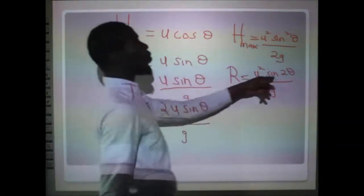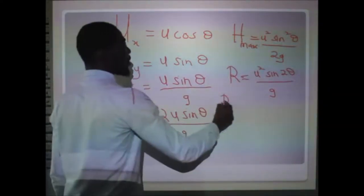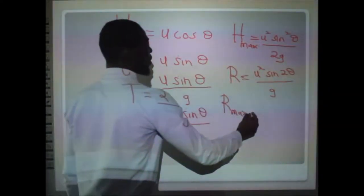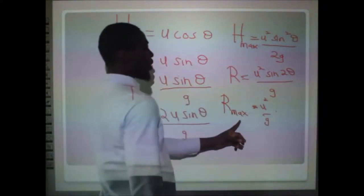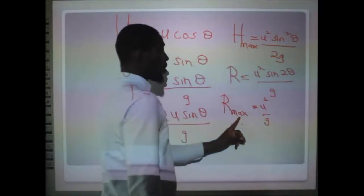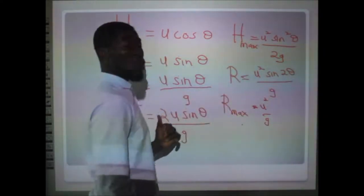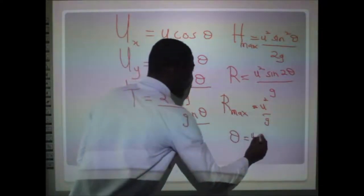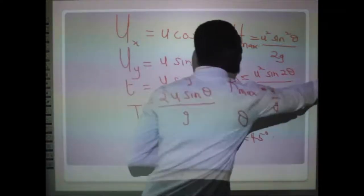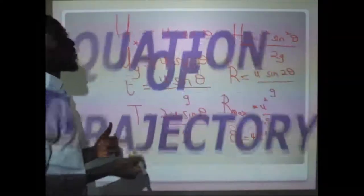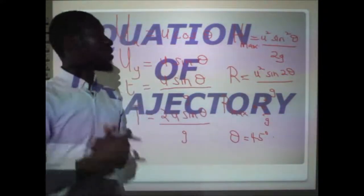The maximum range occurs when sin(2θ) equals 1, giving R_max = u²/g. This requires that sin(2θ) = 1, which implies our angle of projection θ must be 45 degrees. That means the angle between the initial velocity and the horizontal must equal 45 degrees.